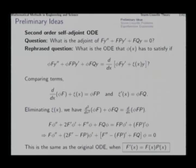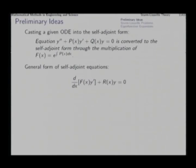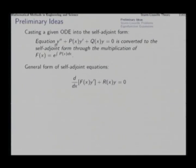The same condition appeared when solving the Leibnitz equation: y prime plus p y equal to something, multiplied by f gives f y prime plus f p y, with the condition f prime must equal f p. So to cast a second order ODE into the self-adjoint form, we multiply with the integrating factor f(x) = e^(∫p dx), the same factor used in the Leibnitz equation. Once we multiply with this f, the coefficient of y double prime is f and of y prime is f p = f prime, automatically satisfying the self-adjoint condition.